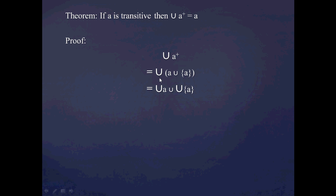In a previous video, I asked you to prove that you can essentially distribute the union operator. So I distribute the union operator to both parts: the union of A, union with the union of the set containing A. And one thing to realize here is that the union of the set containing A is equal to just A, because the set containing A has only one member — namely A — and the members of that are just precisely the set A.